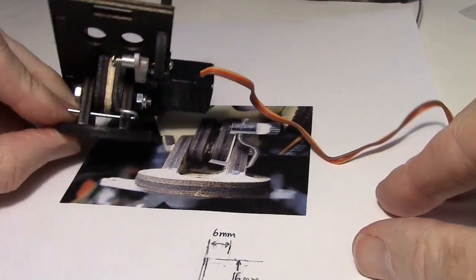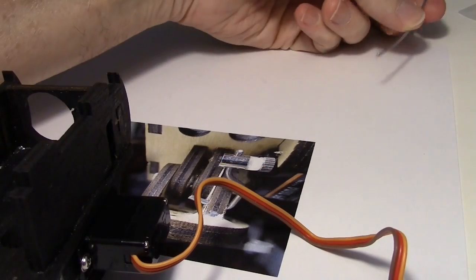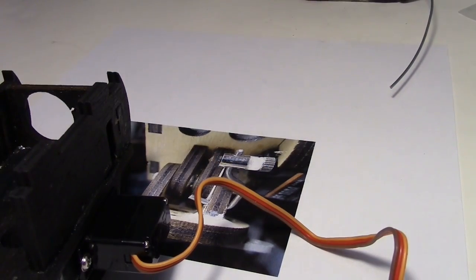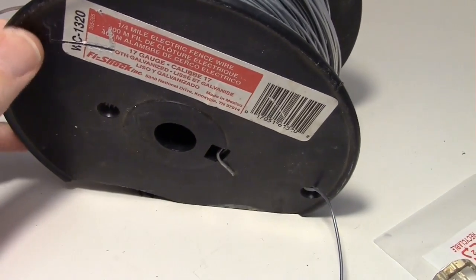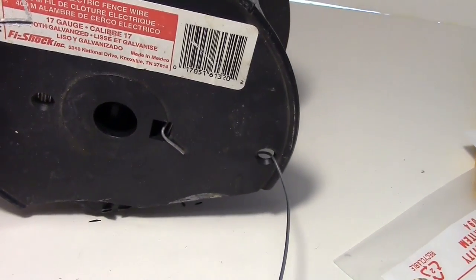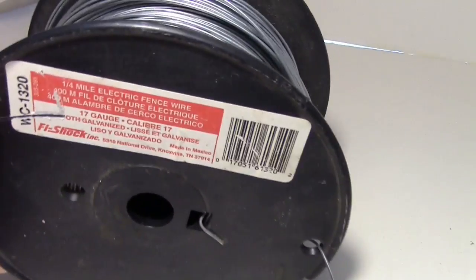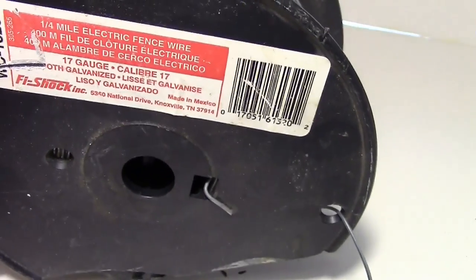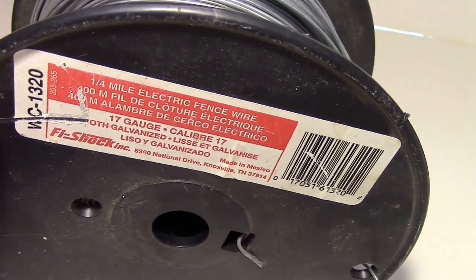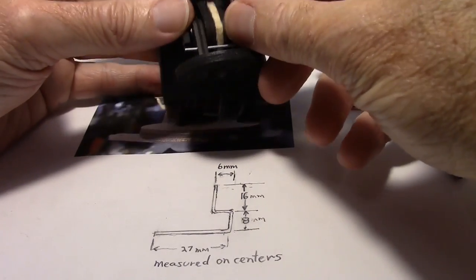Now the wire I used is galvanized electric fence wire. Unfortunately it comes in a pretty large roll. So I ended up buying looks like 400 meters or a quarter mile worth. It's 17 gauge is what it is. It's a little bit bigger than a paper clip. So you got the dimensions.